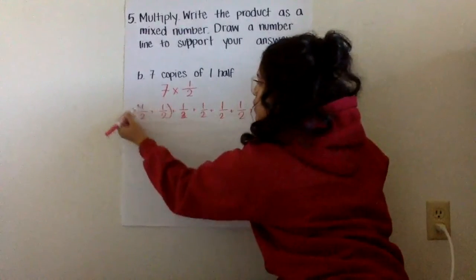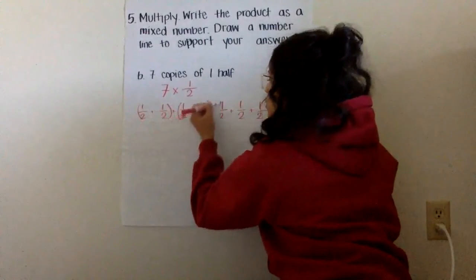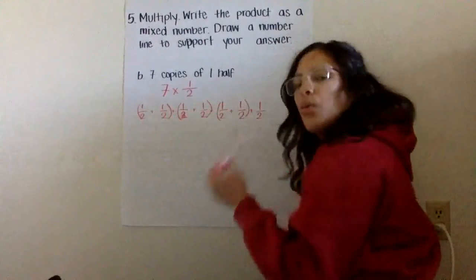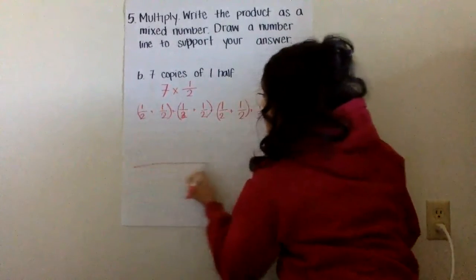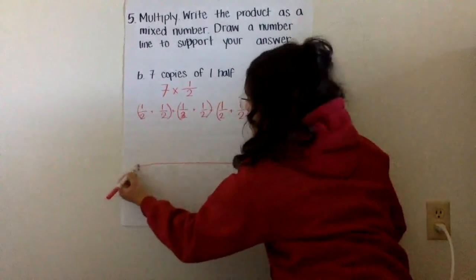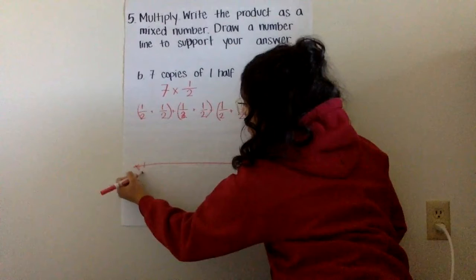Then once again, I think about, well, here's a whole, here's a whole, here's a whole. And I have that one half remaining. So I'm going to work through this on a number line right away.